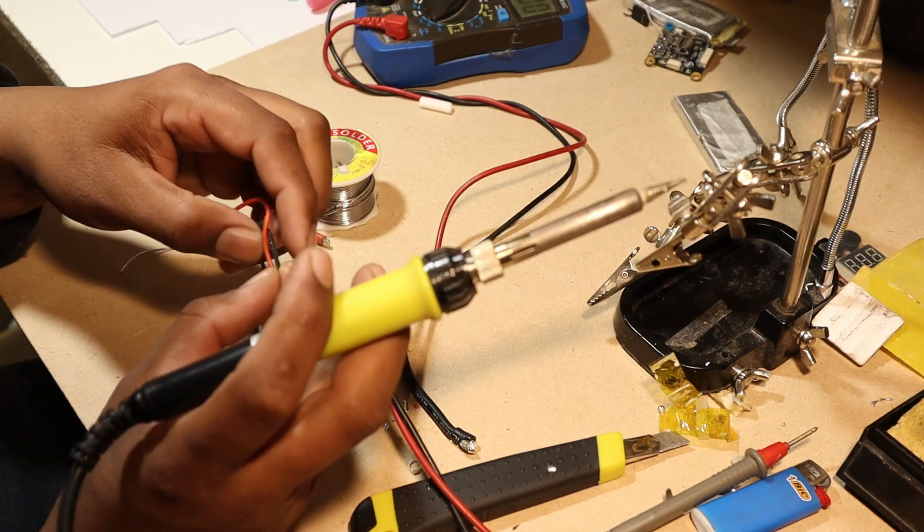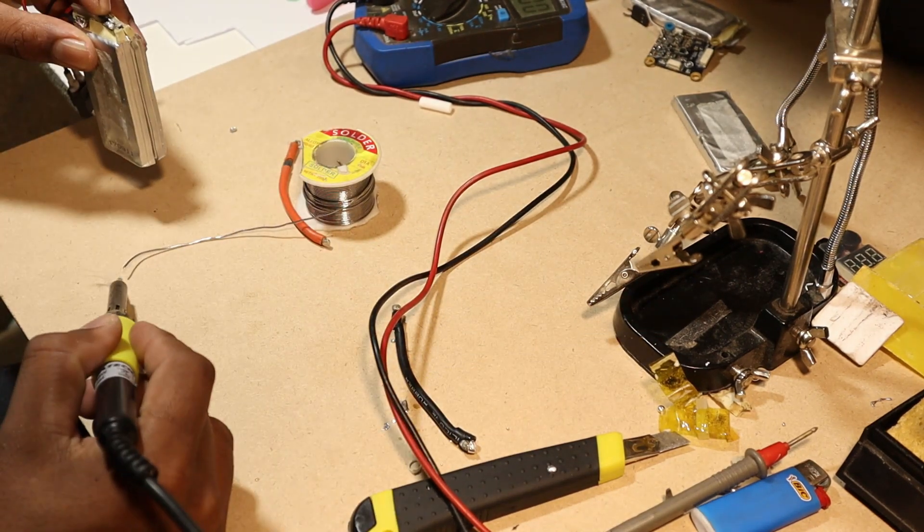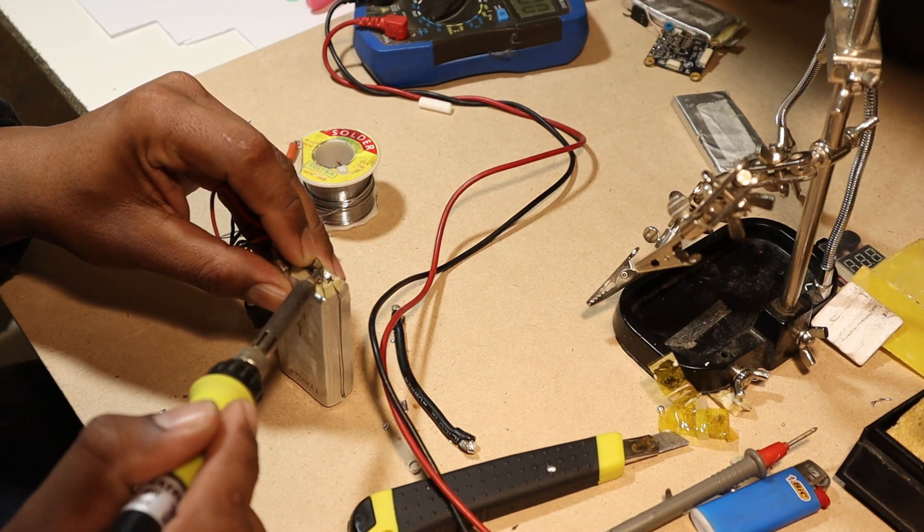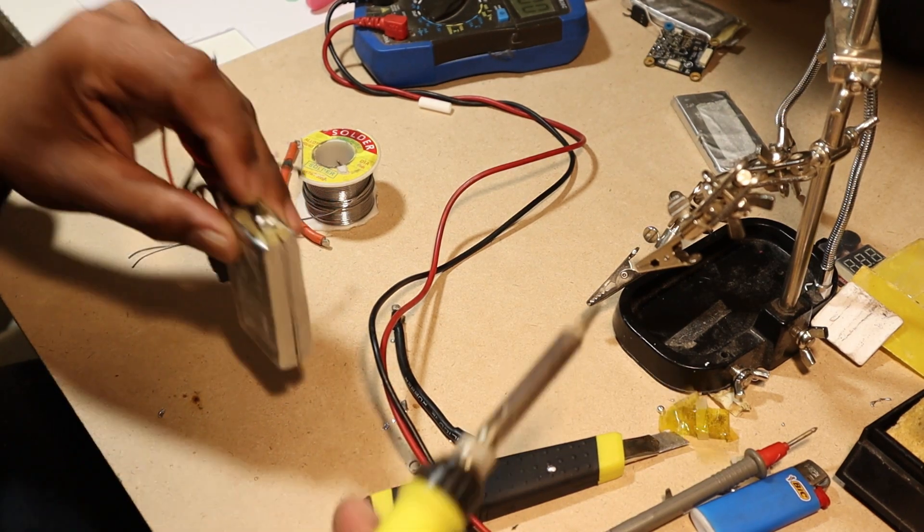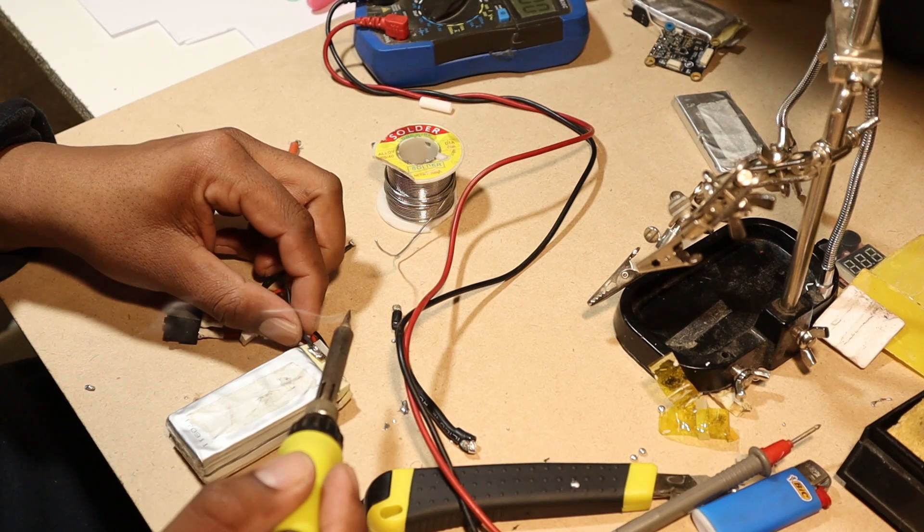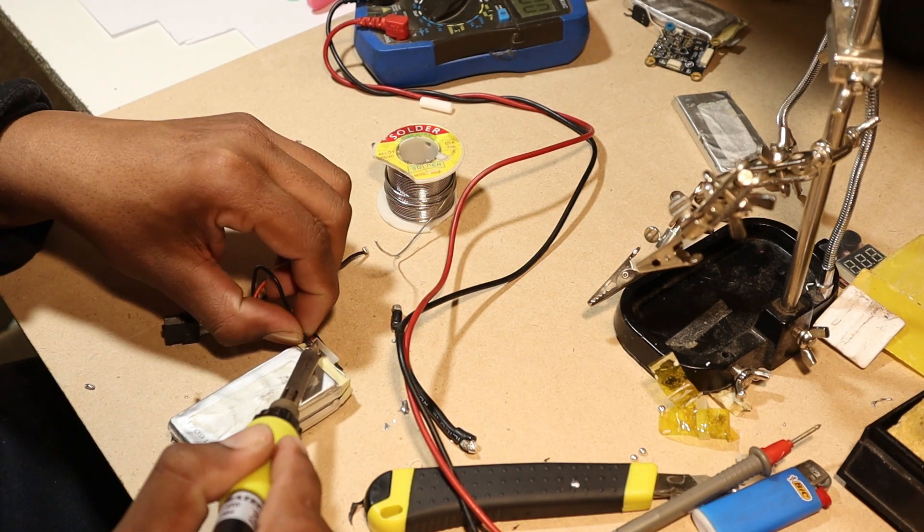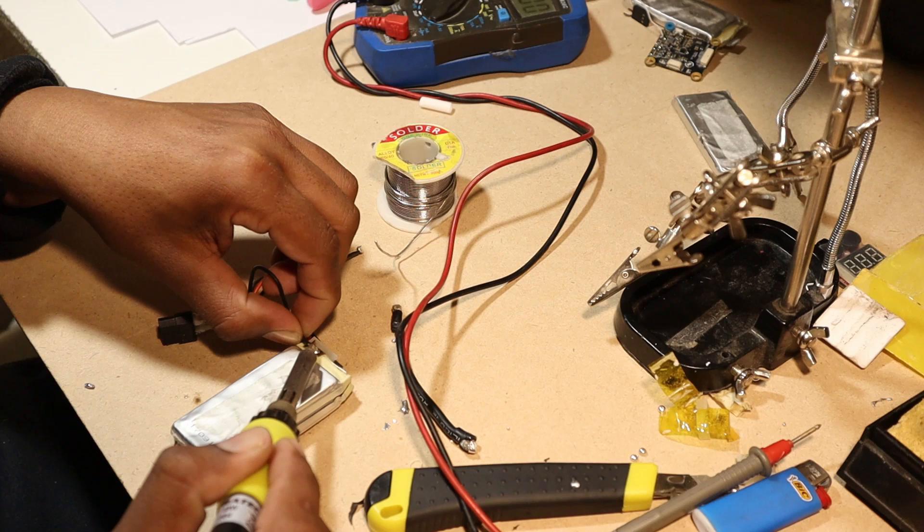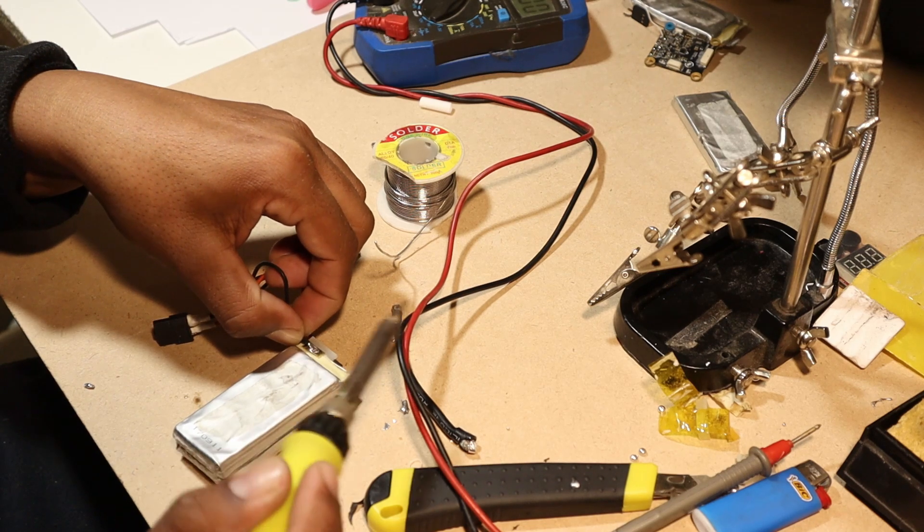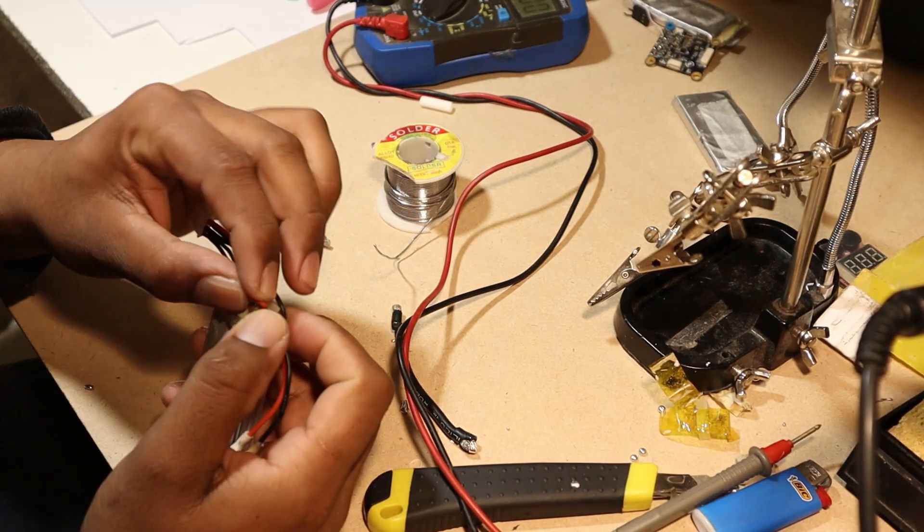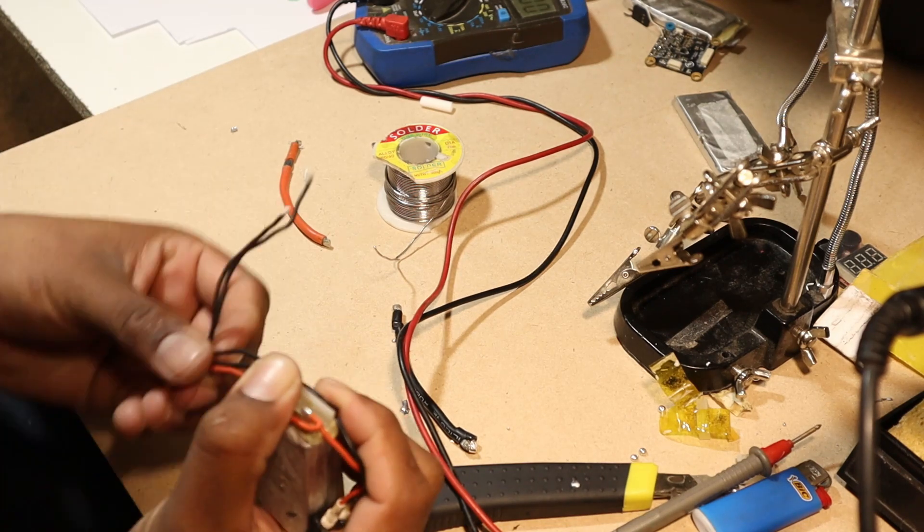When you're connecting the balance connector, the red wire from the balance connector is going to go to the positive terminal. The second wire from the red will go in between two cells, and the final third wire will go to the negative terminal. Because we are using only two cells, there will be only three wires on our balance connector.